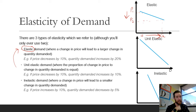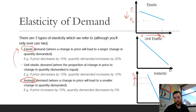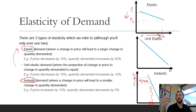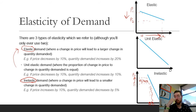Then we have inelastic demand, which is where a change in price will lead to a smaller change in quantity demanded. Looking at P1 and P2, you can see down here there's not a very big change in quantity — the change in price gap is bigger than the gap in quantity. This tends to be for necessities and things you're addicted to. For example, if the price of petrol goes up 10%, I'm still buying it because I need it to get to work — it's not going to significantly affect my quantity demanded.